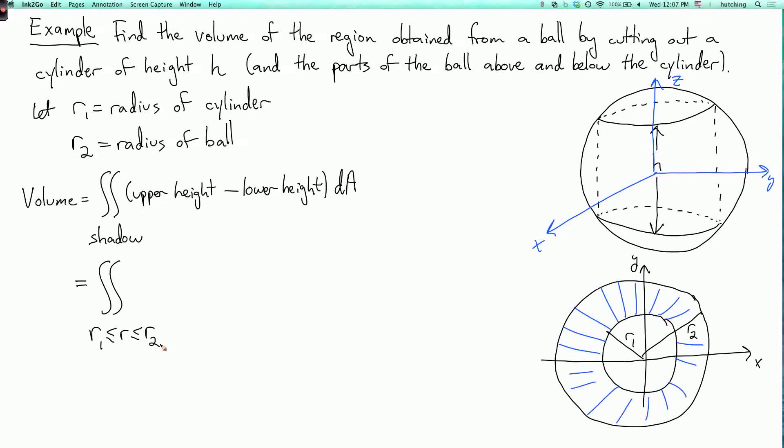And the upper height is the height of the upper part of this sphere of radius r2, so it's the square root of r2 squared minus x squared minus y squared. And then the lower height is minus the negative square root, and then I integrate over area. Instead of taking this thing and then subtracting minus it, I could more simply just multiply by two. So the double integral r1 less than or equal to r is less than or equal to r2, with the square root of r2 squared minus x squared minus y squared dA.